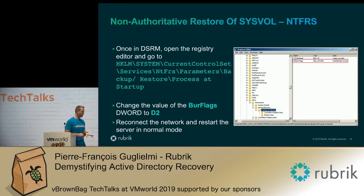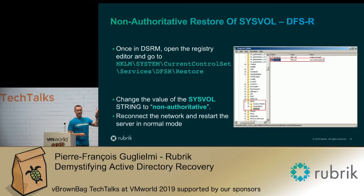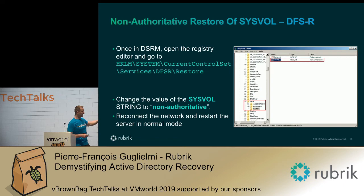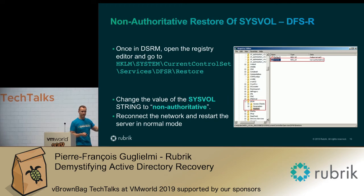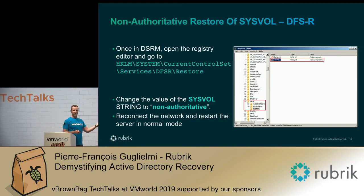If using DFSR, the registry key is different — it's in DFSR restore. You will have to create the key SysVol if it does not exist and set it to non-authoritative. Reconnect the server to the network, restart, done.